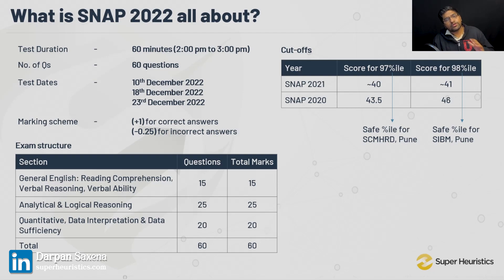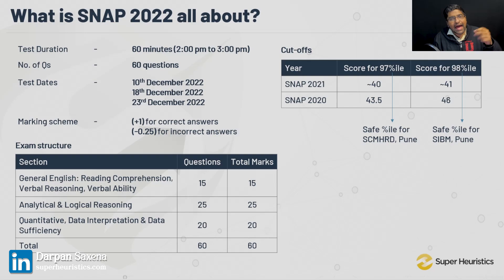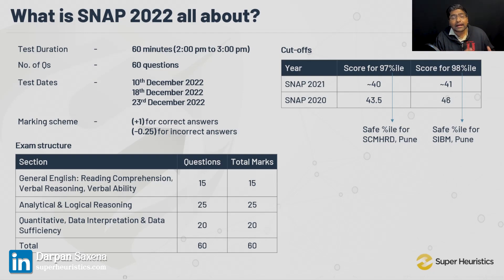These two are the best institutes you should aim for if you are a serious SNAP aspirant. Now, one very simple thing you can see tells you a lot about SNAP. Each correct answer gives us one mark. The cutoff for a 97 percentile is as high as 40 or 43 — meaning out of 60 questions, you need to get 40 to 43 net correct questions to get into SCMHRD, which means you should aim to attempt at least 50 to 52 questions.